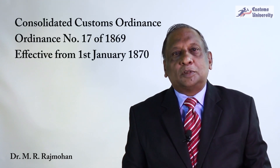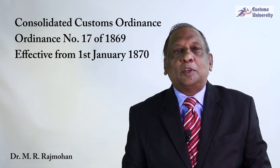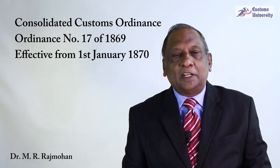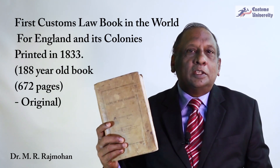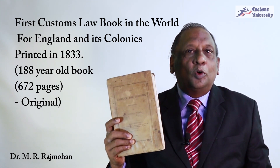Six, international conventions and agreements, mostly customs-related conventions. These six areas comprise together as customs law in this country and in most other countries too. Now when we look at the customs ordinance — we use Customs Ordinance number 17 of 1869, which came into operation from 1st of January 1870. We had customs ordinances before the present one. This book is one of the surviving copies of the first customs law book in the world.